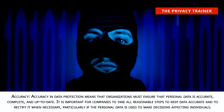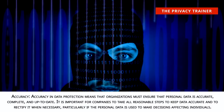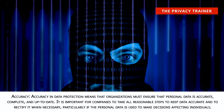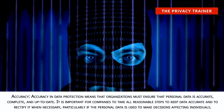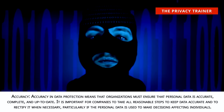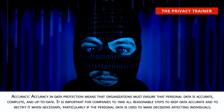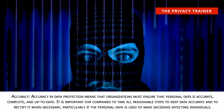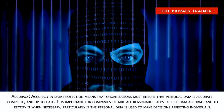Accuracy. Accuracy in data protection means that organizations must ensure that personal data is accurate, complete, and up-to-date. It is important for companies to take all reasonable steps to keep data accurate and to rectify it when necessary, particularly if the personal data is used to make decisions affecting individuals.